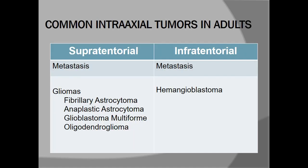In adults, we can divide brain tumors into supratentorial and infratentorial. Metastases are the most common in both categories. In the supratentorial compartment, gliomas are the second most common and can be further divided into different subtypes. In the infratentorial compartment, hemangioblastoma is the second most common tumor in adults.